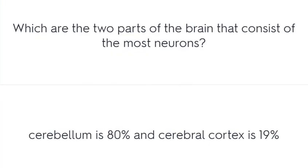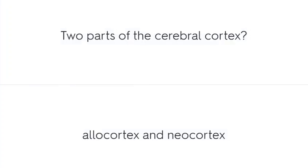Which are the two parts of the brain that consist of the most neurons? The cerebellum is 80% and the cerebral cortex is 19%. The two parts of the cerebral cortex are the allocortex and neocortex.